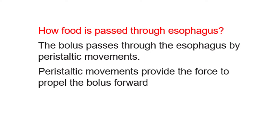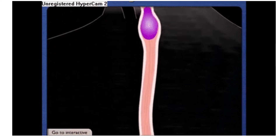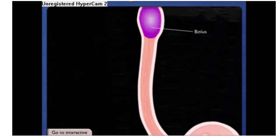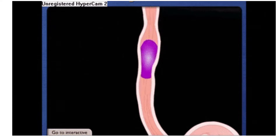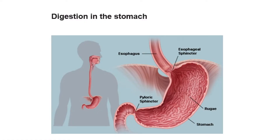Next, we'll discuss how food passes through the esophagus. Food passes through the esophagus as a bolus by peristaltic movement. Peristaltic movements provide the force to propel the bolus forward into the stomach, and occur mainly due to contraction and relaxation of esophagus muscles. You can see the peristaltic movement here — the contraction and relaxation of the esophagus muscles propels food towards the stomach.